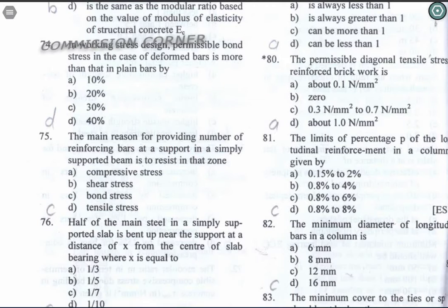Question 75: The main reason for providing a number of reinforcing bars at a support in a simply supported beam is to resist bond stress in that zone. If bond stress is the reason for failure, we use thinner bars of more in number — the number increases but the bars become thinner.